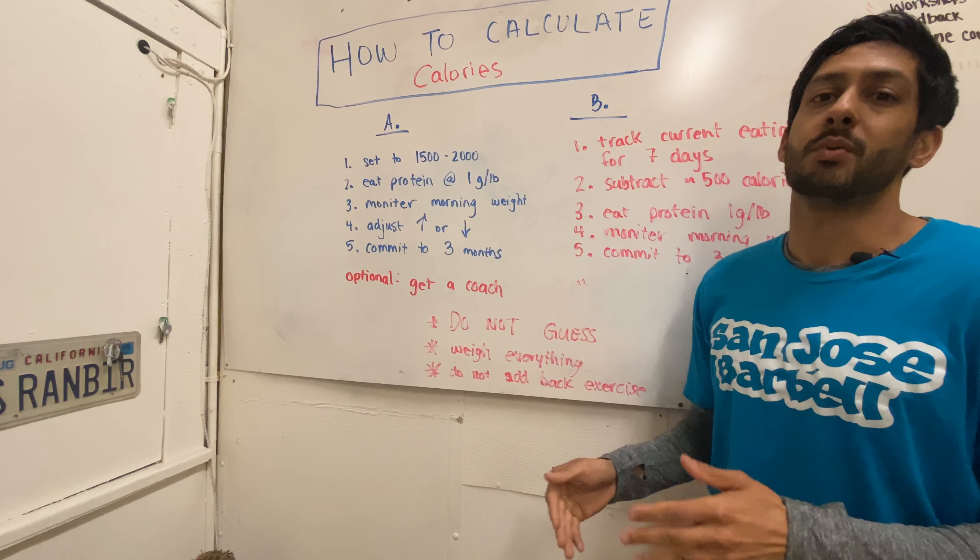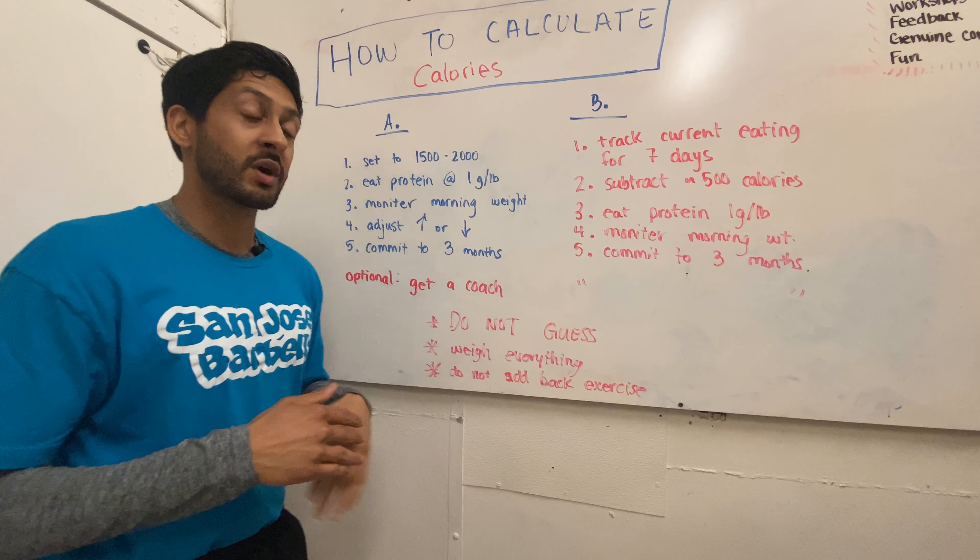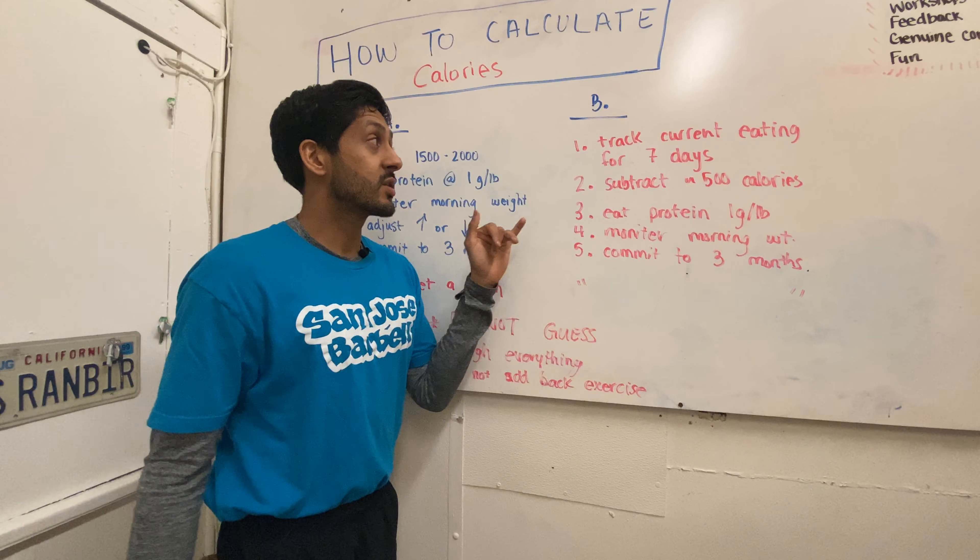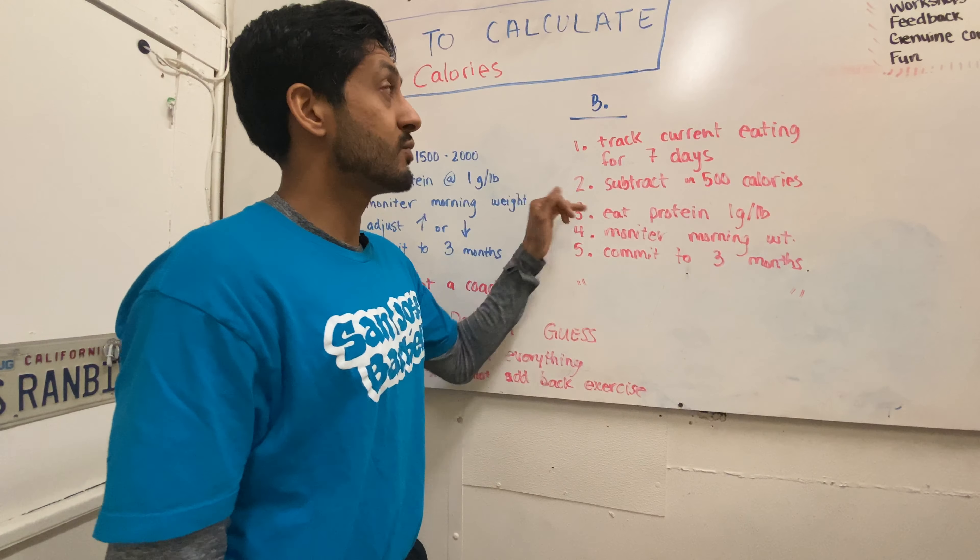My recommendation: commit to three months. That commitment is extremely important. Optionally — and this applies to both methods — get a coach so you don't have to think. You just track calories, and your coach monitors what happens and makes adjustments, explaining why they're being made. All of my greatest progress has come from finding someone better than me who could give me direction and structure.